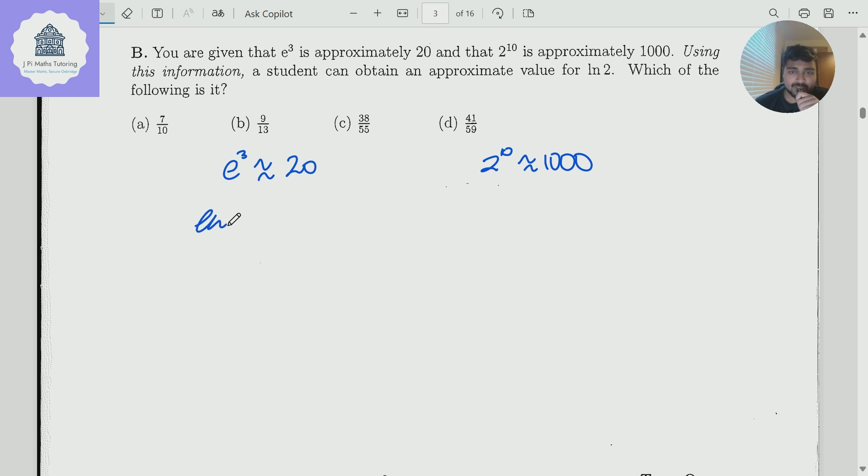So it probably makes sense to take ln of these. Broadly speaking, ln both sides here. So ln of e cubed is 3, and that should be approximately ln of 20. Now just using log laws, this is ln2 plus ln10. So 3 is approximately ln2 plus ln10.